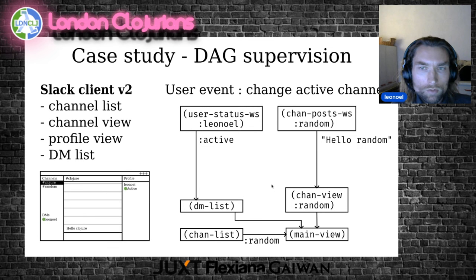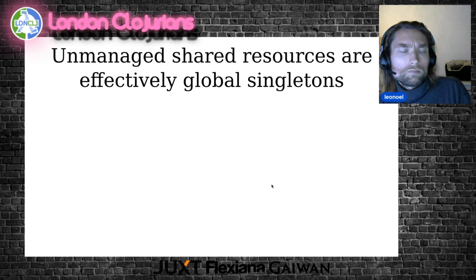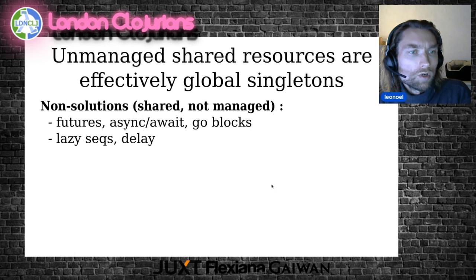What's the right answer to the DAG supervision problem? It turns out the answer is pretty simple. But before we talk about that, let's talk about existing solutions. We have common constructions for sharing resources, and they are not managed. We have futures, async/await, go blocks, lazy sequences, delays. All of that is about sharing. The problem is, what happens when you spawn a future? What you get is a container — you know the container will be filled with the value at some point, but you have no reference to the process.